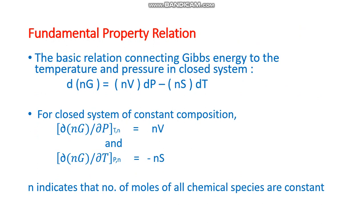Here G is the Gibbs energy, V is the volume and S is the entropy, and P and T are temperature and pressure. N is the number of moles of chemical species.